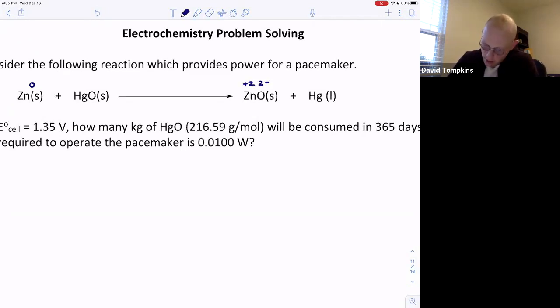Zinc is being oxidized from zero to two plus. Mercury oxide, where mercury is positive two and oxygen is negative two, mercury is being reduced to its elemental liquid form where it's zero in oxidation state.